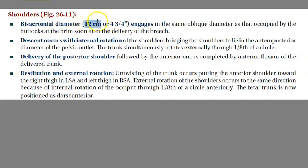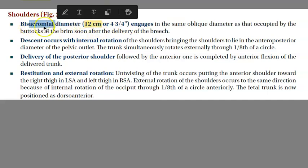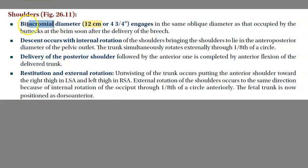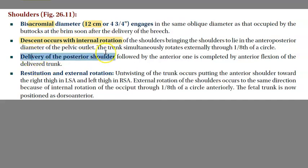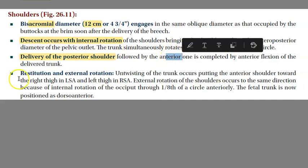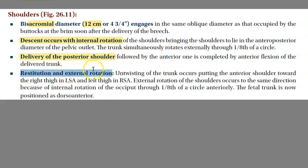For the shoulder: the bisacromial diameter of 12 centimeters is trying to come out. Descent occurs, then internal rotation. The posterior shoulder is delivered first, then the anterior shoulder, then restitution and external rotation.